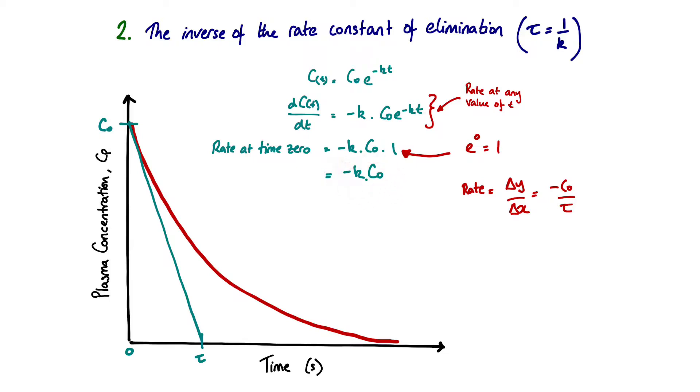This description here is exactly the same as this description here. They're talking about the gradient of the graph at time 0, so they must be equivalent. So minus k times by C₀ equals minus C₀ over tau. The C₀ functions will cancel and the minus signs will also cancel. So k equals 1 over tau. Or if we rearrange, tau equals 1 over k.